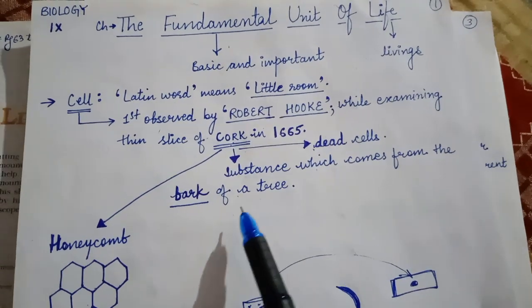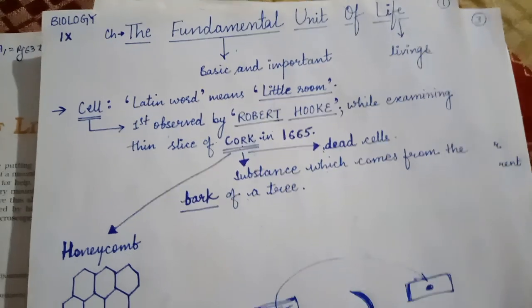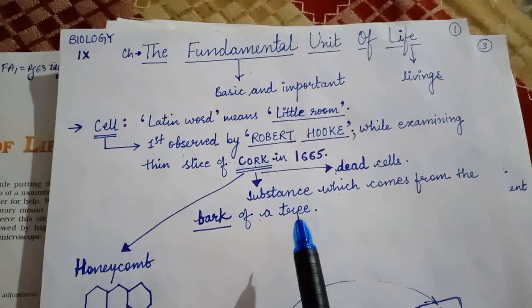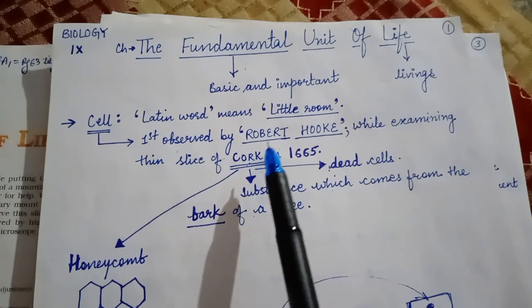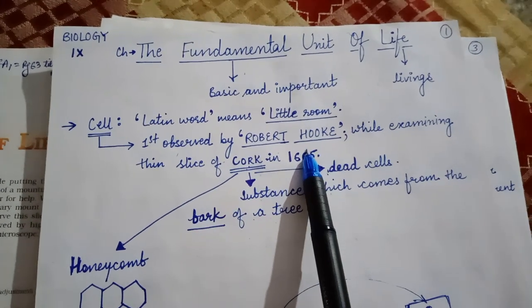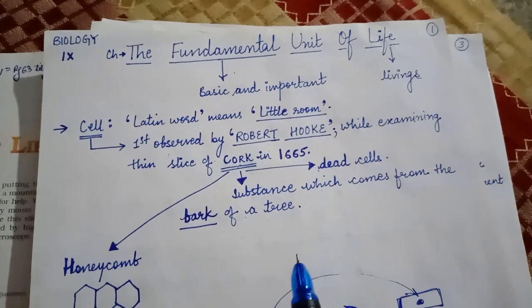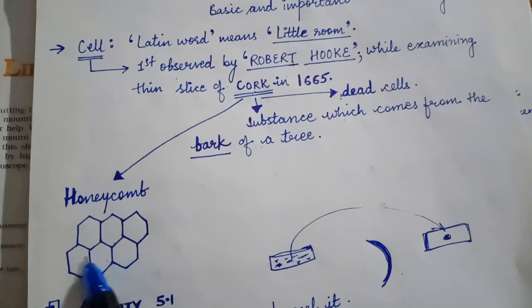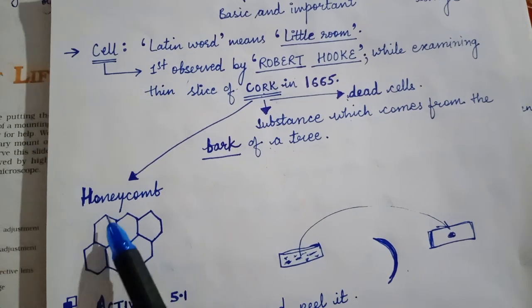What is cork? Cork is a substance which comes from the bark of tree. Bark means jo peed ki chhal hoti hai, usse jo hai derived kiya gaya hai, that is cork. This bark and cork has dead cells. So it is important that first time it was because of Robert Hooke the discovery of cell took place.